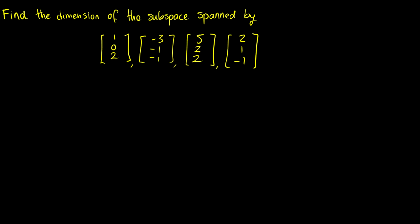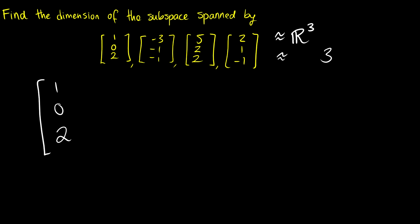Let's find the dimension of the subspace spanned by these four vectors. The dimension is the number of vectors needed to form a basis. I see three entries in each vector, so this is probably in R3, meaning the dimension might be 3. However, we can't make this claim yet — this might be a subspace that is just a plane in R3 through the origin. We'll row reduce to check for free variables.